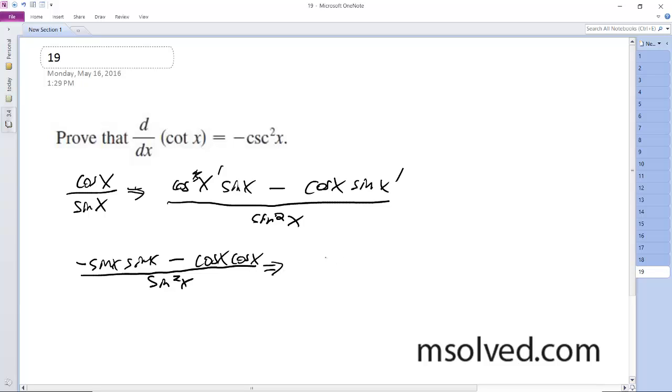So we factor out negative 1 and get sine squared x plus cosine squared x, which equals 1, over sine squared x. Since 1 over sine squared x is cosecant squared, we get negative cosecant squared x.